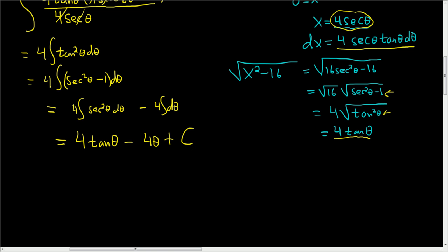Now we have to write everything in terms of x. We'll use this equation x equals 4 secant theta to create a triangle. Dividing by 4, we have secant theta equals x over 4.